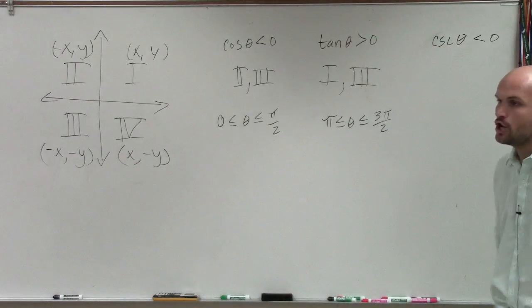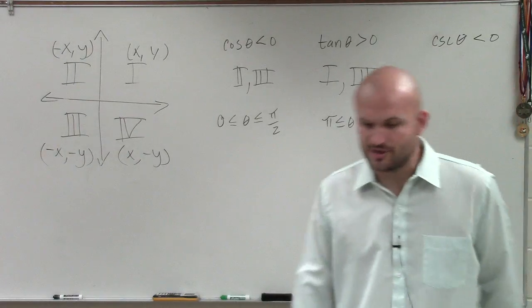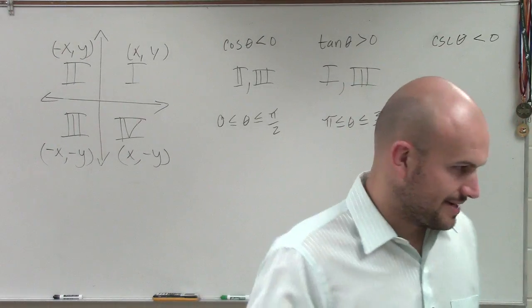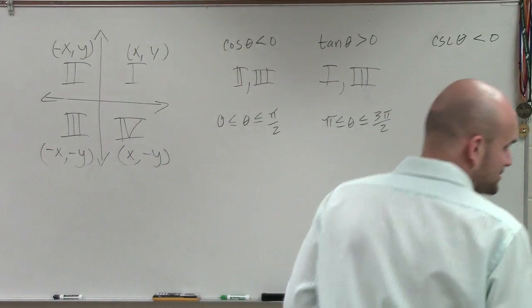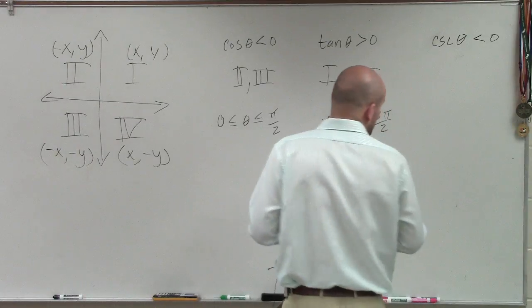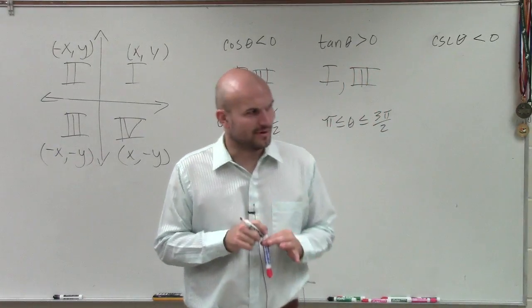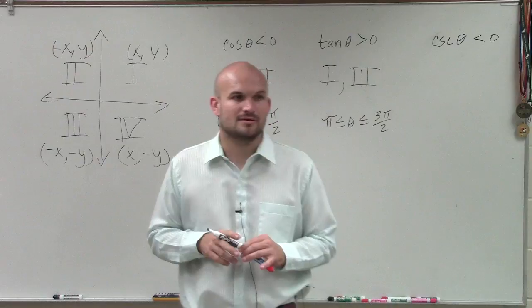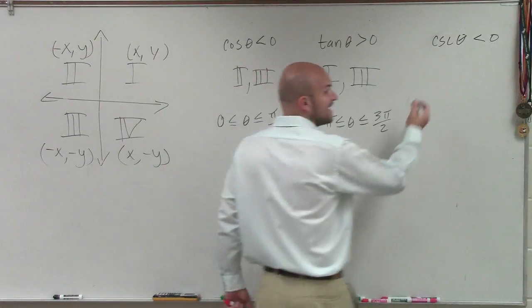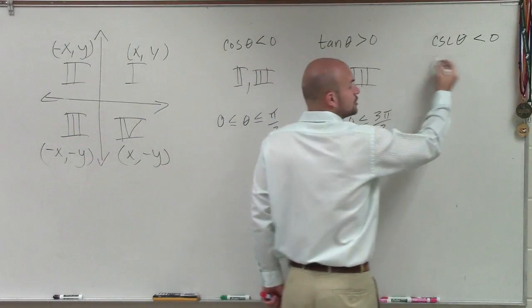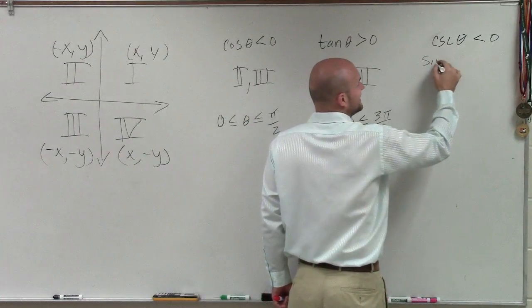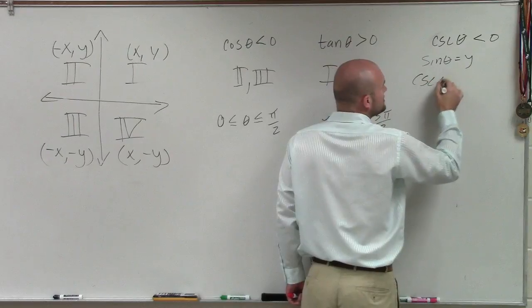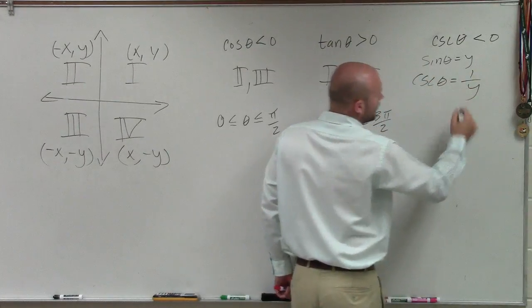And what about cosecant? Fisher, cosecant. Cosecant represents what on the unit circle? The 1 over y. It is the reciprocal. Cosecant is the reciprocal of sine. So if sine of theta is y, the cosecant of theta equals 1 over y.